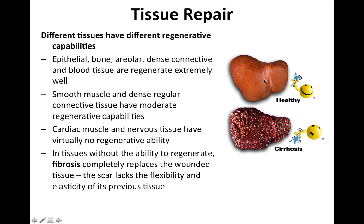Here you can see pictures of a healthy liver compared to a liver that has cirrhosis. You can see scar tissue has replaced the healthy liver tissue. Frequently, cirrhosis — this scarring of the liver — can be due to too much alcohol in the system. The liver can't process all of it and becomes scarred tissue. So that's fibrosis and cirrhosis of your liver compared to a healthy liver.